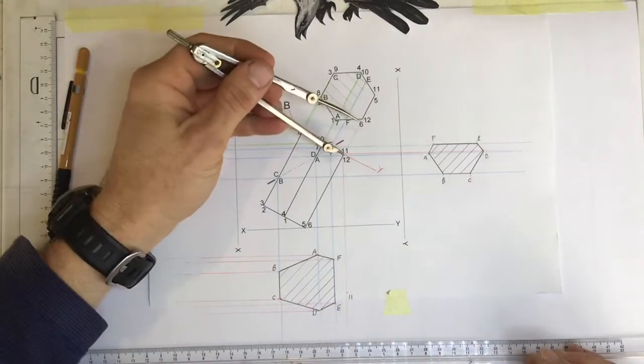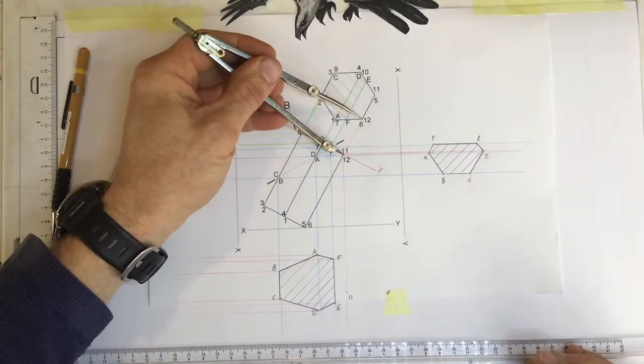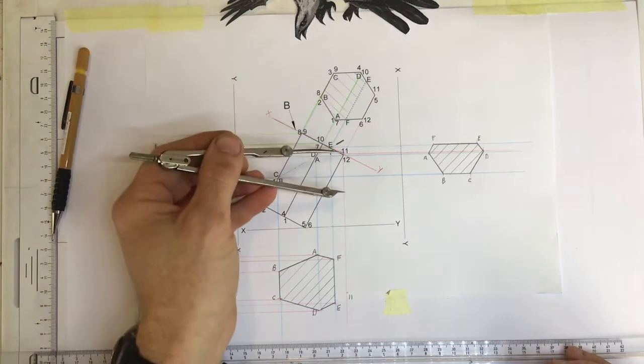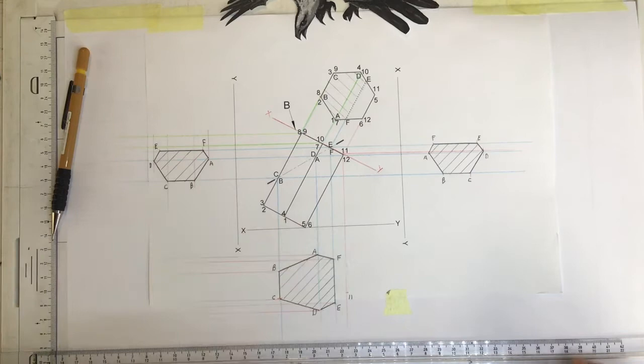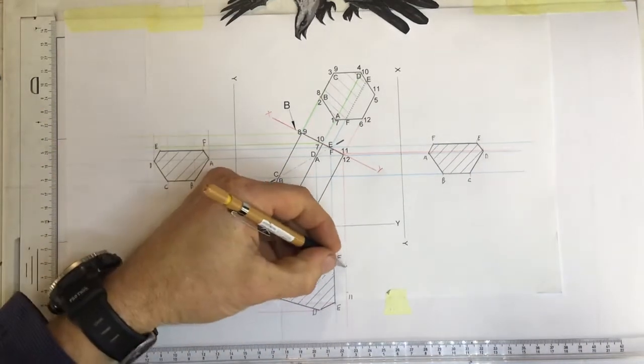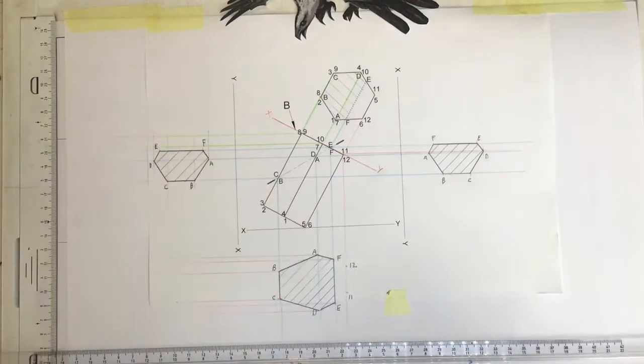I'm going to come over here and I'm going to find 12, come over here, find 12, go down to the new xy axis, mark that off and there is 12.